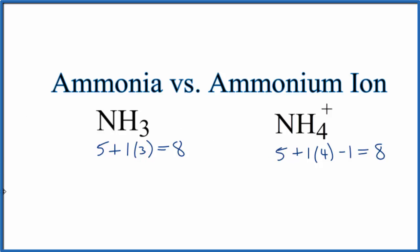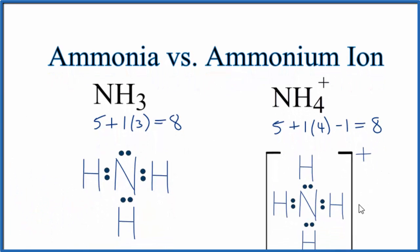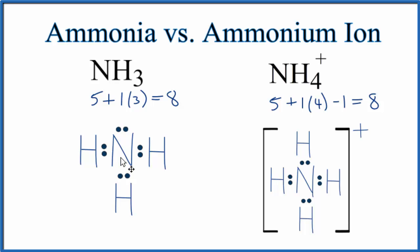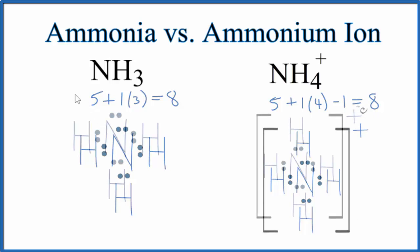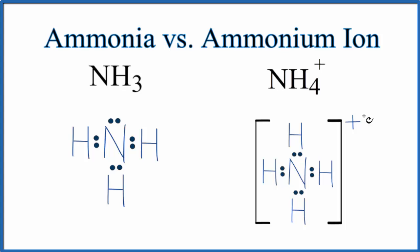If we look at the Lewis structure for each one, we can see those eight valence electrons. They're distributed around that central nitrogen. For the ammonium ion, we put brackets around it and a positive sign to show it's an ion. We don't need to do that for ammonia since that's a neutral compound.